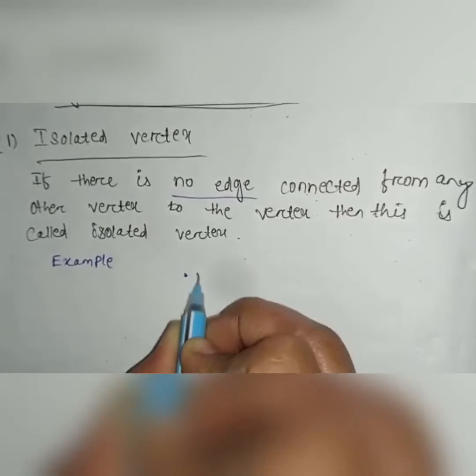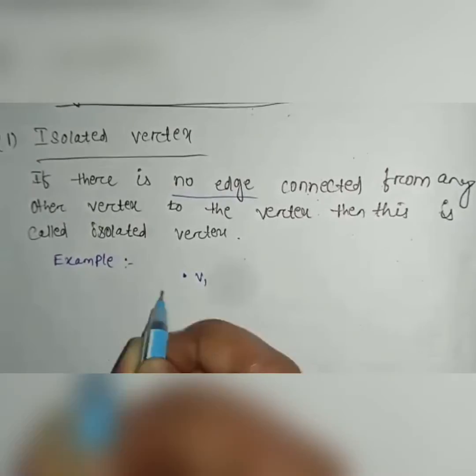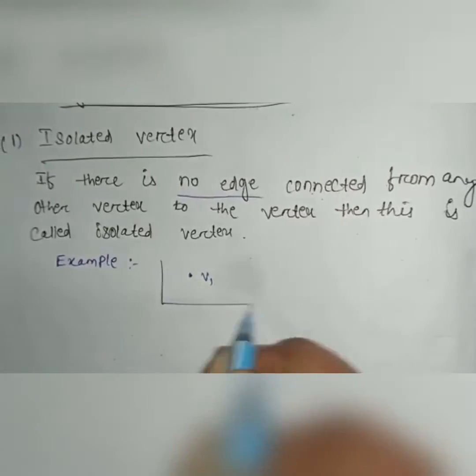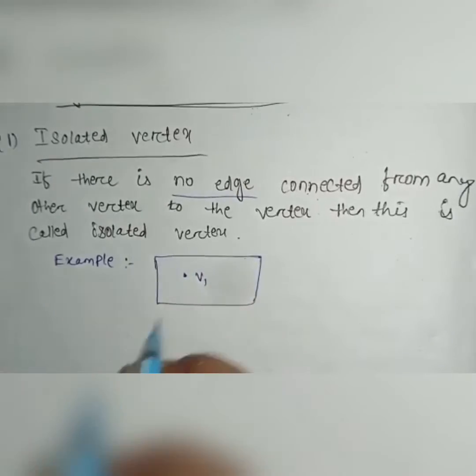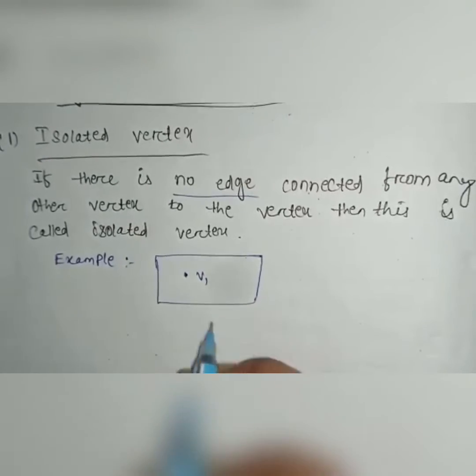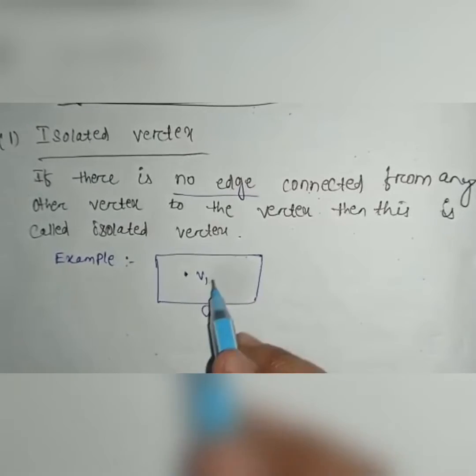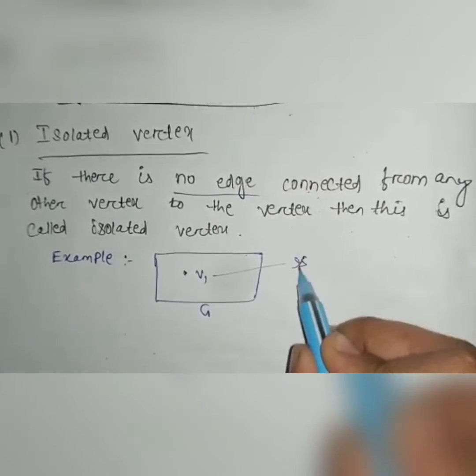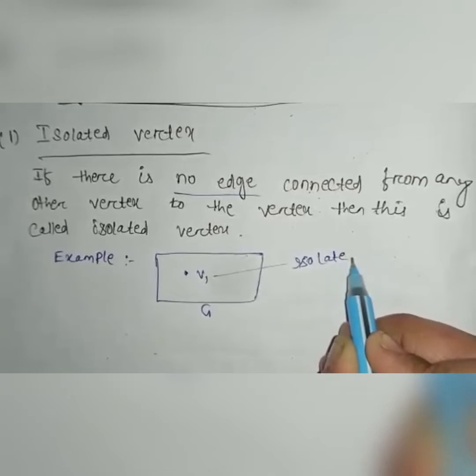Example, if only one vertex V1 is present in the graph. If this is the graph and only V1 is present, then this is the isolated vertex. Let's have one more example.